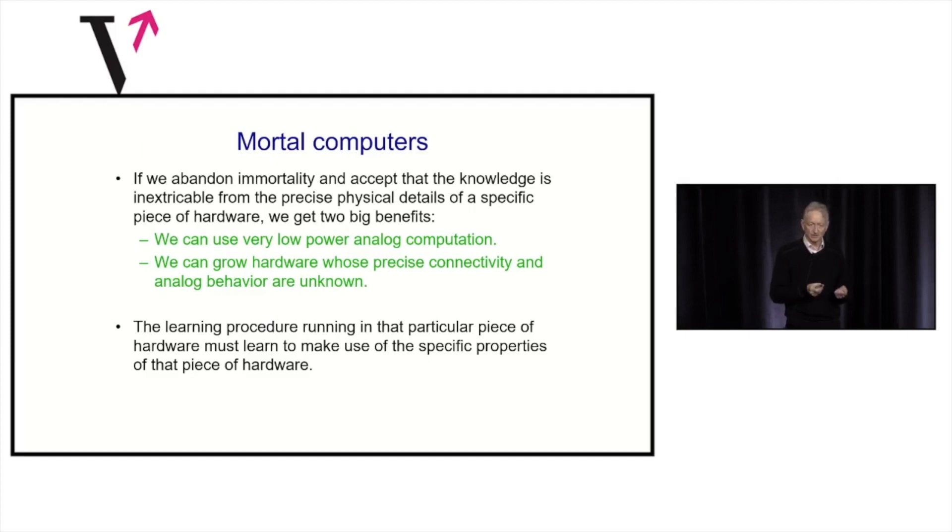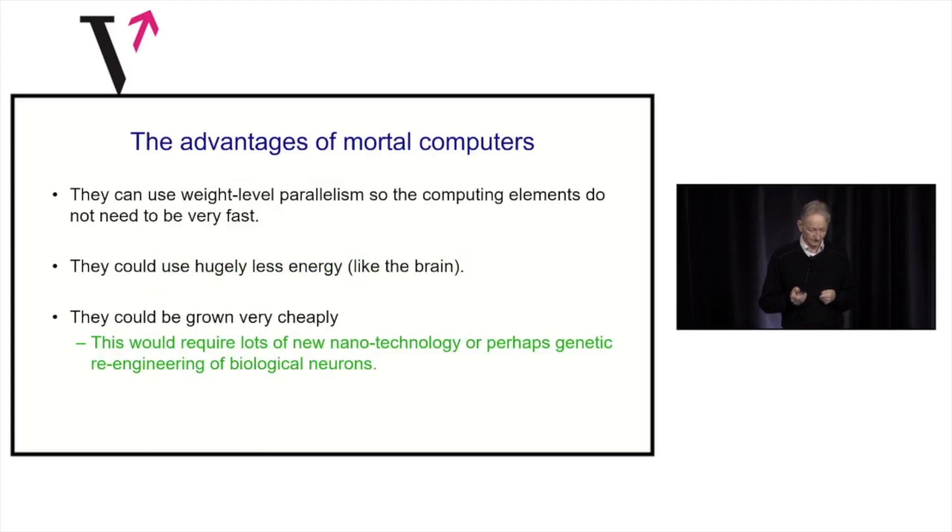For this to work, there has to be a learning procedure that operates in a particular piece of hardware and makes use of all the weird analog properties of that particular piece of hardware. That's what I call a mortal computer. So, it has the advantage that we can use immense parallelism. We can use parallelism at the level of the weights, and so the computing elements don't need to run very fast, which keeps them lower power. Also, we don't need to fabricate these things. Fabrication is getting more and more expensive. You need like a billion dollars. Actually, I think that was a few years ago. You need several billion dollars now to make a fabrication plant. Instead of doing that, what we can do is grow these things very cheaply and very unreliably. That's going to involve a lot of nanotechnology. But these are my predictions about something that's coming, maybe not in the next couple of years, but is coming in the next decade or so, and will be a completely different kind of computer that violates a lot of the very basic assumptions you make that you can separate the knowledge from the hardware.